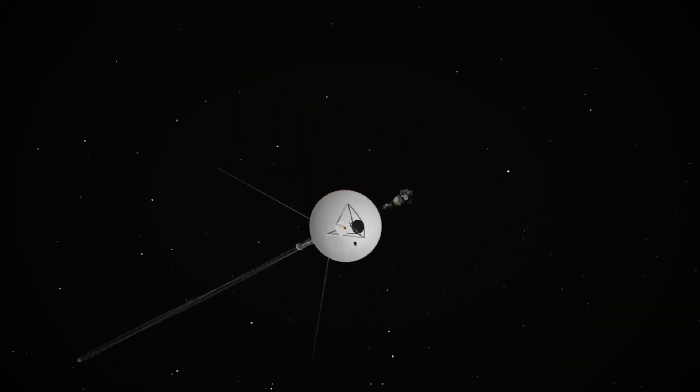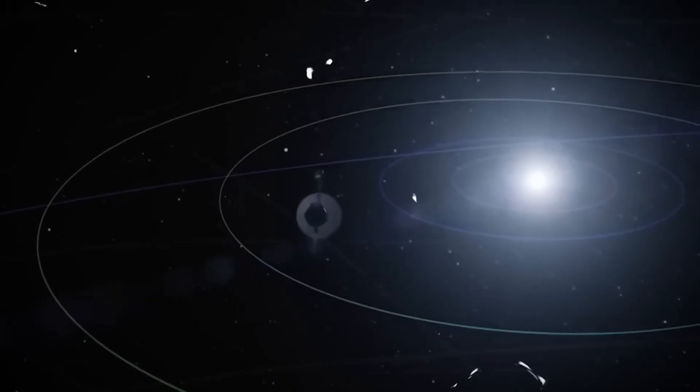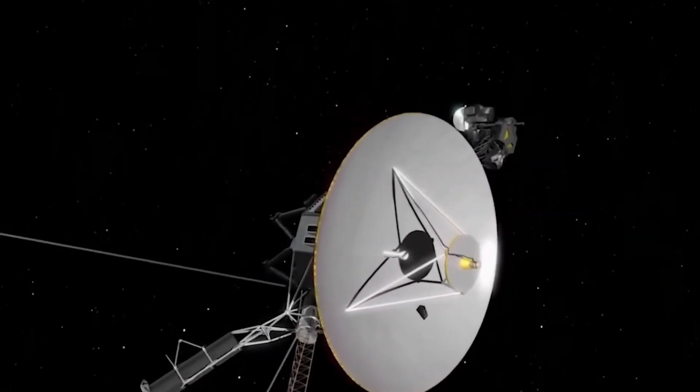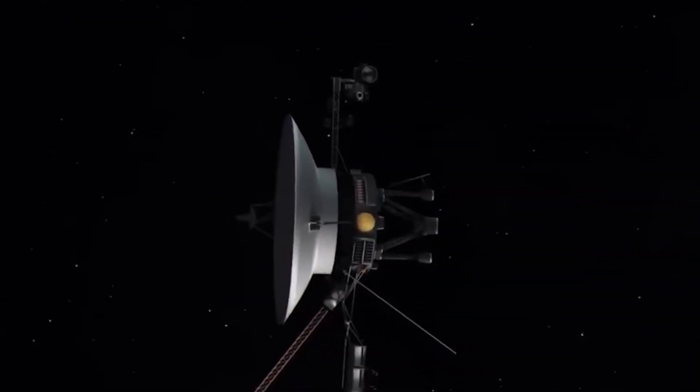Out there beyond the heliopause, space isn't quiet. It's humming. A low-frequency oscillation, steady and rhythmic, fills the void like the pulse of a living thing. Voyager's plasma wave instrument detected a kind of ambient energy whispering through the interstellar medium.